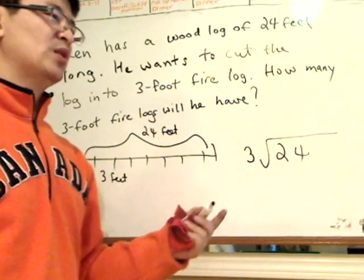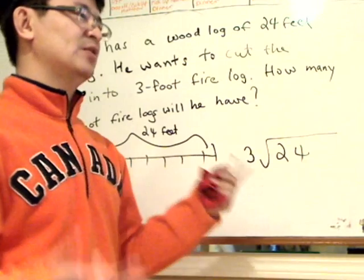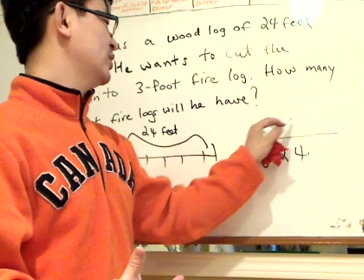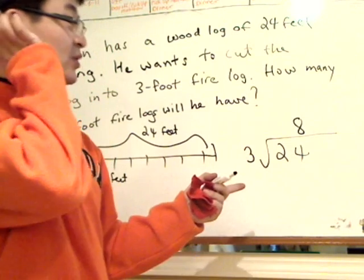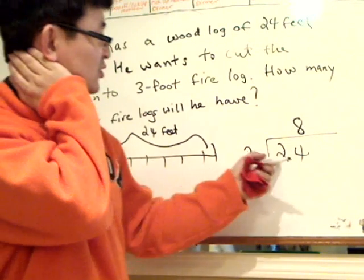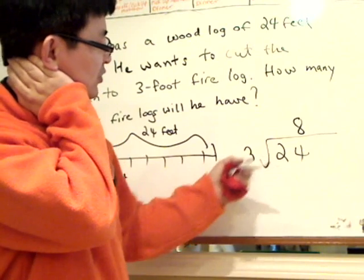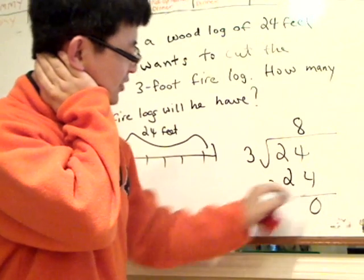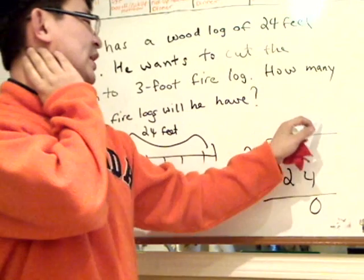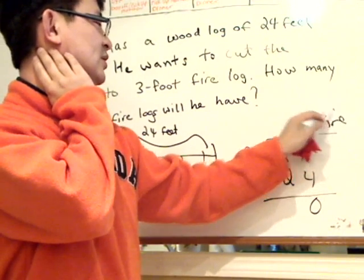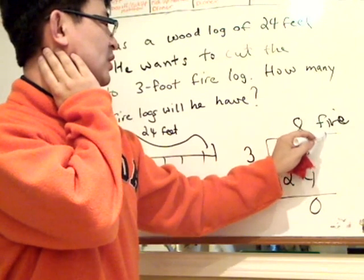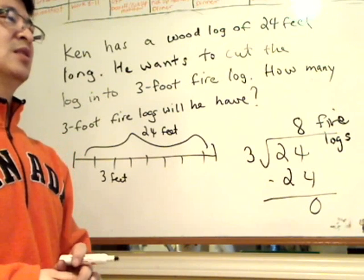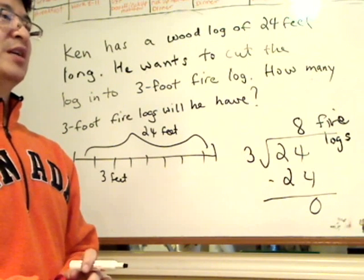This is really a division question of a multiplication, because you've got to find what number multiplied by 3 to get 24 — it really is 8. So if you want to do the division, 3 going into 24, 8 times. So 8 times 3 is 24, subtract it, and it's 0. So really he would have 8 fire logs — 8 fire logs for him, for the fire, I guess he would want to build one.